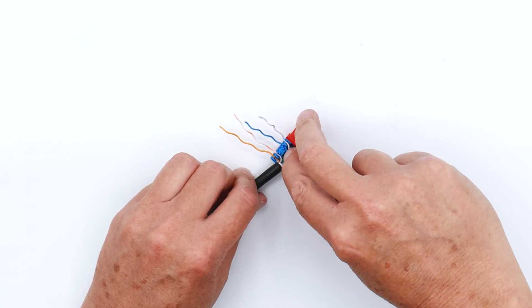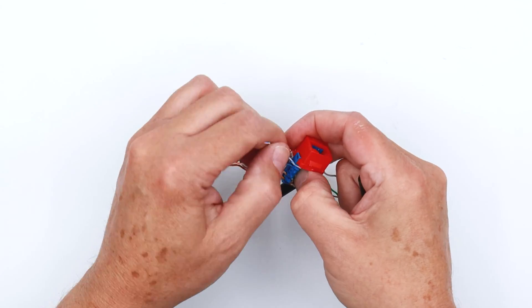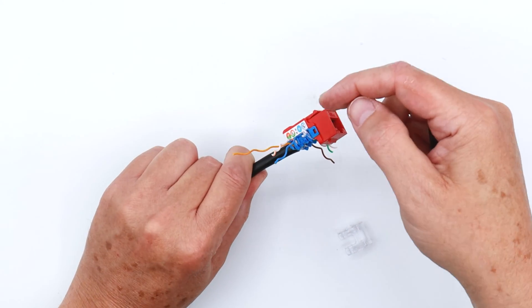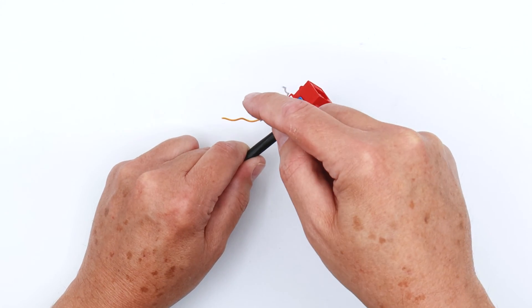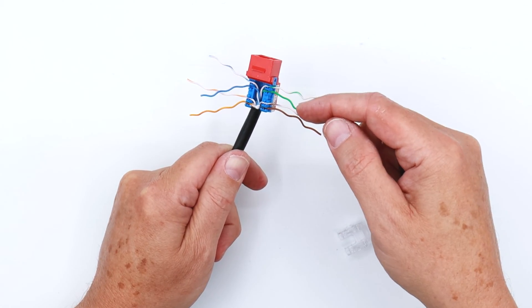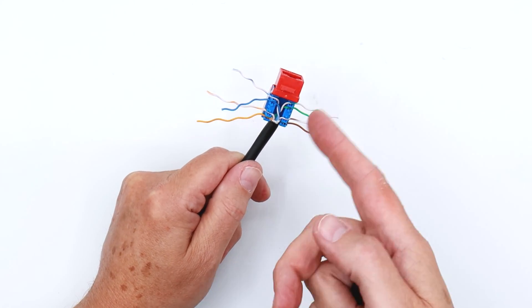Before you go seating any of the conductors here, you want to be sure that they're actually in the correct sequence. So we got white blue, blue, white orange, orange, white green, green, white brown, brown. So they are in the correct sequence.